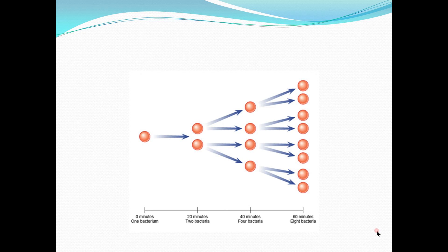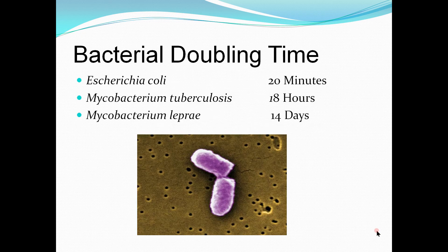The bacterium divides to form two bacteria in 20 minutes — as with the example of Escherichia coli. Within the next 40 minutes there are four bacteria, then they divide into eight. The doubling time is different for each bacterium. For Escherichia coli the doubling time is 20 minutes, and for Mycobacterium tuberculosis its doubling time is 18 hours.